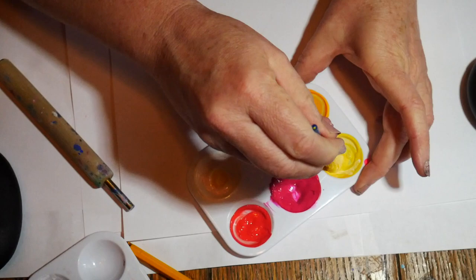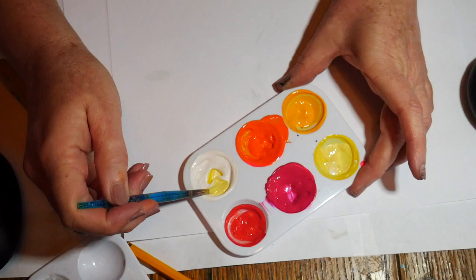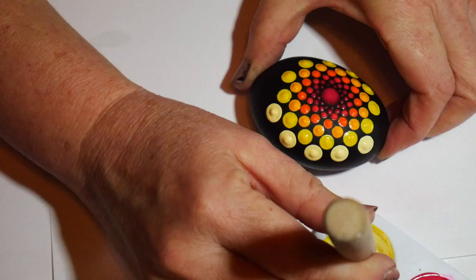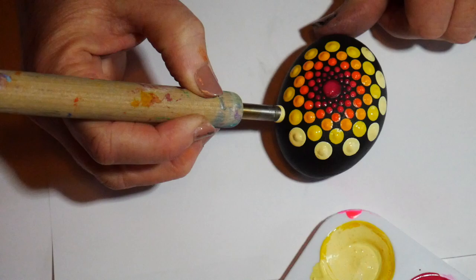Now I'm ready to start adding white to my colors because I'm going to be fading out to white as I get to the bottom of the rock. The white is pretty thick - I want this to be almost like frosting.